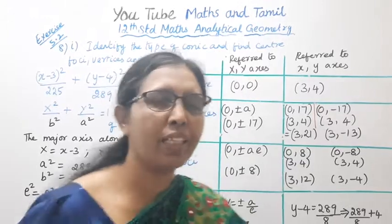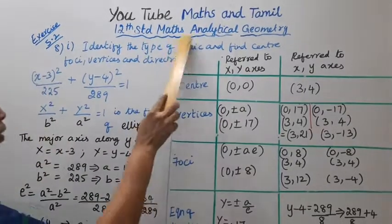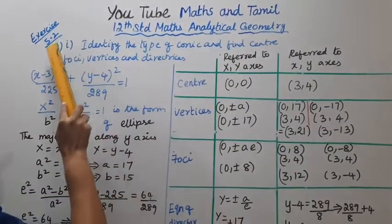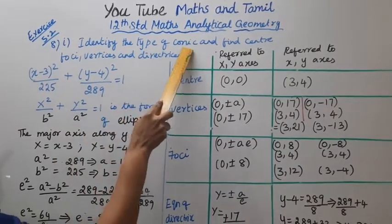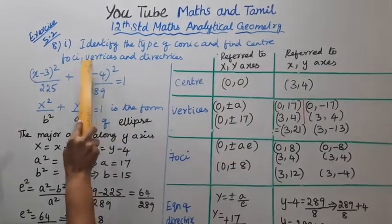Hello students, welcome to Max and Tamil channel. 12th standard Math Analytical Geometry Exercise 5.2, 1st subdivision. Identify the type of conic and find center, foci, vertices and directrices.